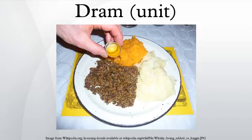Modern unit of mass: in the avoirdupois system, the dram is the mass of one two-hundred-fifty-sixth of a pound, or one sixteenth of an ounce. The dram weighs 875 over 32 grains, or exactly 1.7718451953125 grams.